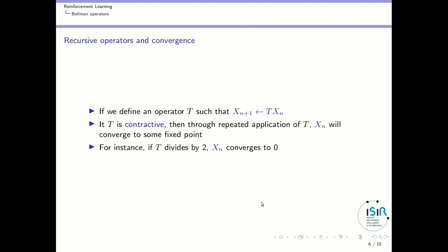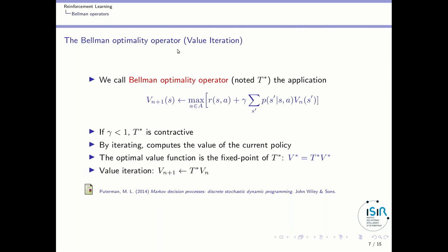To understand dynamic programming, you have to know a very important mathematical property: the property of some recursive operators about convergence. If we define an operator T such that applying T to xn gives xn+1, the important property is that if T is contractive, then through repeated application of T, xn will converge to some fixed point. For instance, if your operator T is division by 2, then whatever the initial value x0, this will converge to 0. The Bellman operators that I will now define are contractive, so they will converge to something when applied to a value function.